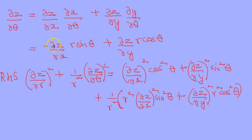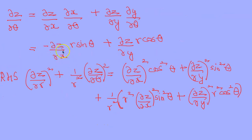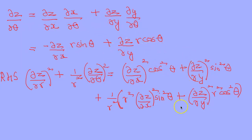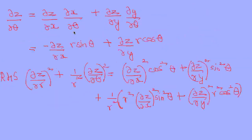Squaring and adding both expressions: (∂z/∂r)² gives (∂z/∂x)²cos²θ + (∂z/∂y)²sin²θ + 2(∂z/∂x)(∂z/∂y)cosθ·sinθ, and (1/r²)(∂z/∂θ)² gives (∂z/∂x)²sin²θ + (∂z/∂y)²cos²θ − 2(∂z/∂x)(∂z/∂y)sinθ·cosθ. The cross terms cancel, the r² terms cancel, and using cos²θ + sin²θ = 1 we get (∂z/∂x)² + (∂z/∂y)².